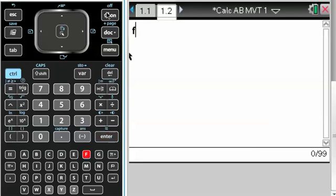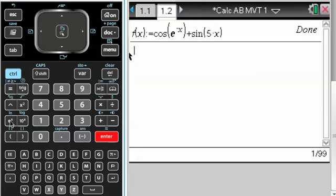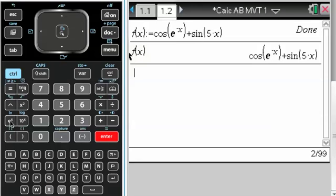And I need to define the function, so f of x is set equal to, and then that's going to be the cosine of e to the negative x. You can see I already have something in f of x, but I'm starting over, so that's alright. Plus sine of 5x. It says done, so that's f of x now. Recall that, just to check.